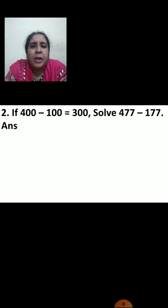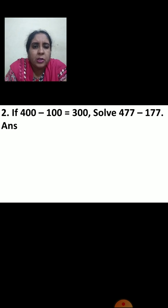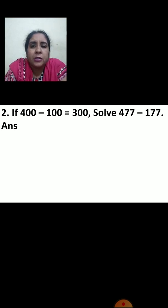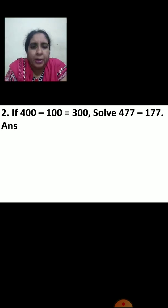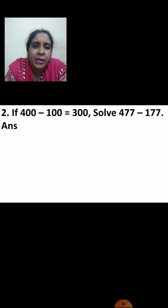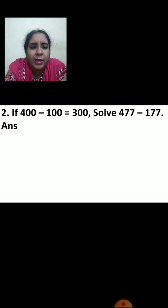Next question: if four hundred minus one hundred equals three hundred, solve 477 minus 177. You can do this orally. In 400 minus 100: units place zero minus zero is zero, zero minus zero is zero, four minus one is three. Same way for 477 minus 177: units place seven minus seven is zero, tens place seven minus seven is zero, and four minus one is three. So the answer is three hundred.